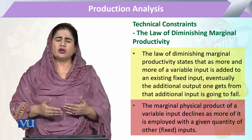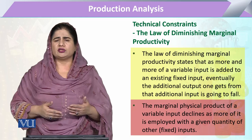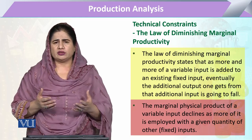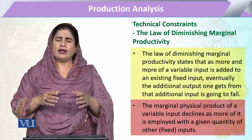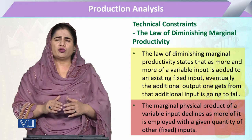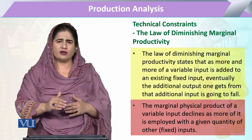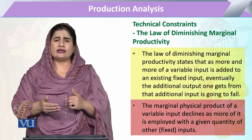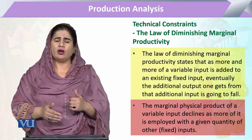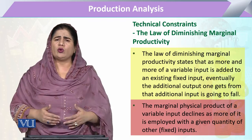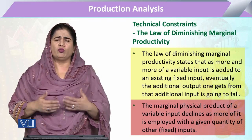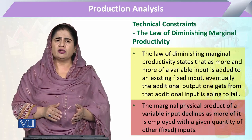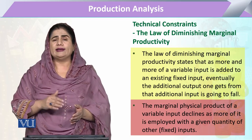In other words, when we use one unit, two units, three units, four units, our total production will increase. Then one moment will come when total production will stagnate — it will neither increase nor decrease. And if we add even more, total production will decline.